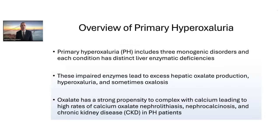Primary hyperoxaluria includes three monogenic disorders, and each condition has distinct liver enzymatic deficiencies. These impaired enzymes lead to excess hepatic oxalate production, hyperoxaluria, and sometimes oxalosis. Oxalosis is the calcium oxalate deposition in tissues such as the bone, eye, and heart when patients reach stages of advanced kidney disease. Oxalate has a strong propensity to complex with calcium, leading to high rates of calcium oxalate kidney stones, nephrocalcinosis, and chronic kidney disease.